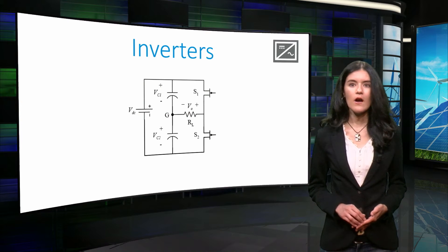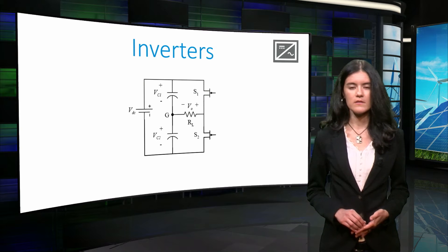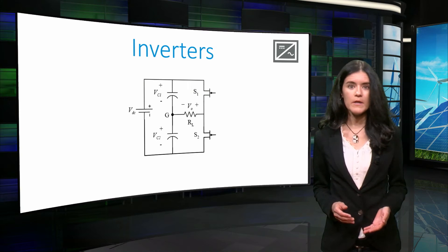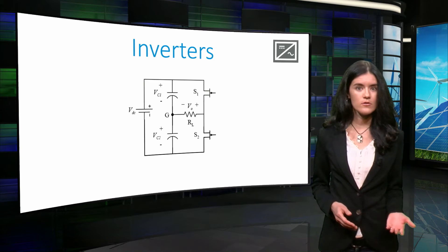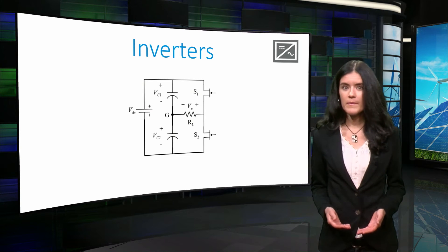Power converters can contain uncontrollable semiconductor devices, like the diode, or controllable semiconductor devices like transistors and MOSFETs, which can be used as switches.